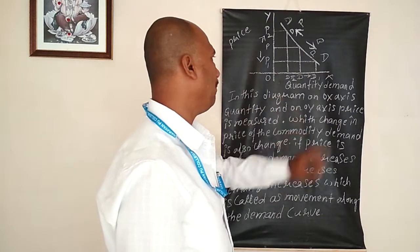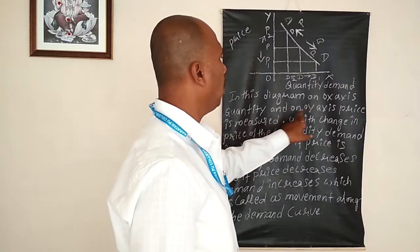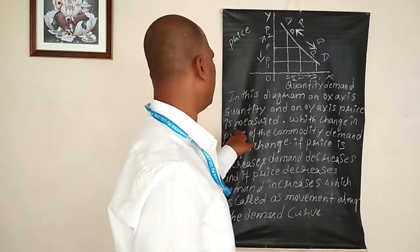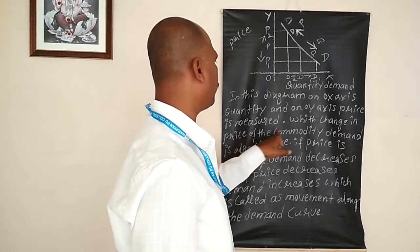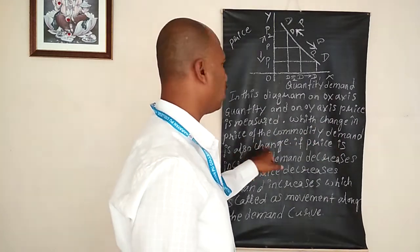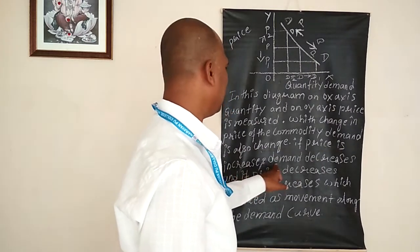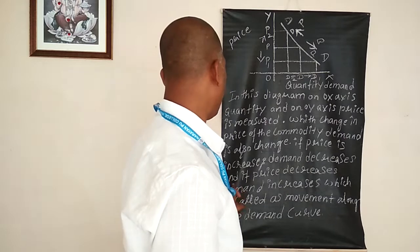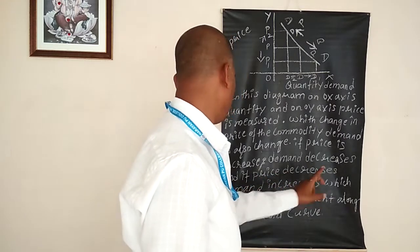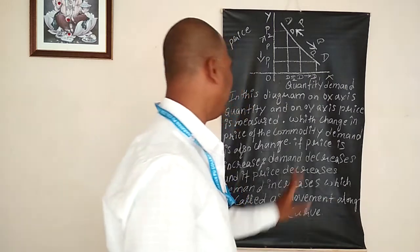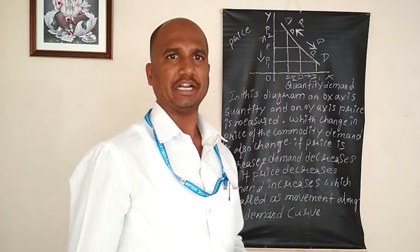In this diagram, on the OX-axis quantity and on the OY-axis price is measured. With changes in the price of the commodity, demand also changes. If price increases, demand decreases. If price decreases, demand increases — which is called movement along the demand curve.